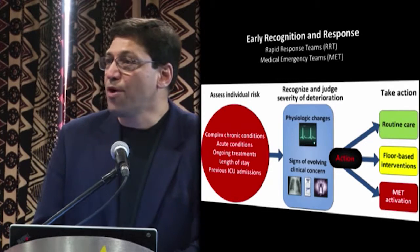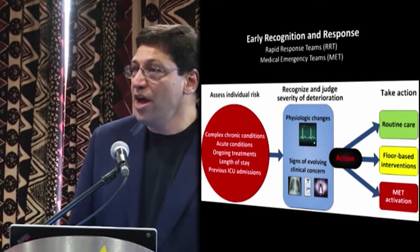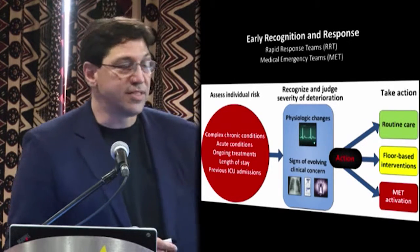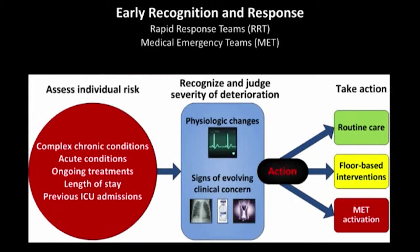Inside our hospitals, perhaps, is more dangerous than in our ERs. From rapid recognition and rapid response teams — MET teams — we know that recognizing the individual at risk can be quite complex, like finding a needle in a haystack. Getting better at assessing individual risk, recognizing and judging the severity of deterioration, and then dispatching trained individuals to deal with it has been successful in every system that has studied it. We can make a difference in this early recognition problem.